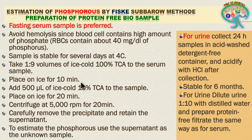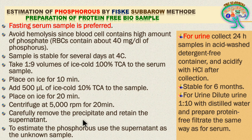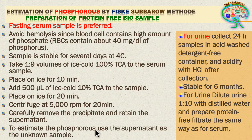Place the mixture on ice for 10 minutes after adding the TCA. Then add 500 microliters of ice-cold 10% TCA to the sample and incubate on ice for 20 minutes. Centrifuge at 5000 rpm for 20 minutes. After centrifugation, remove the precipitate and retain the supernatant. The precipitate contains proteins, as TCA precipitates protein. Use the supernatant as the unknown sample, which contains the phosphorus released from blood serum.